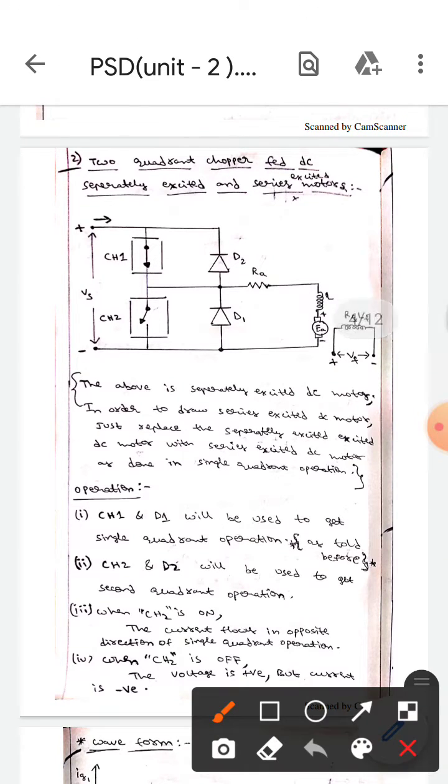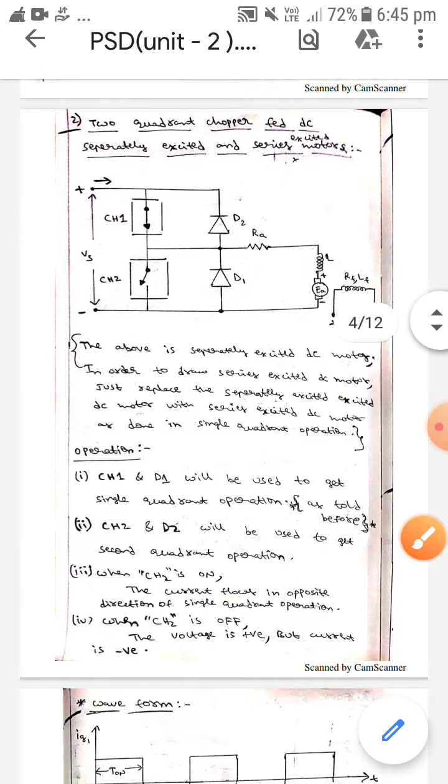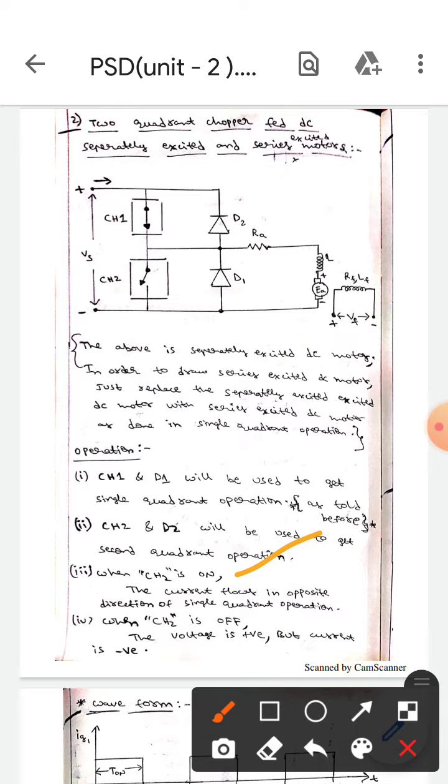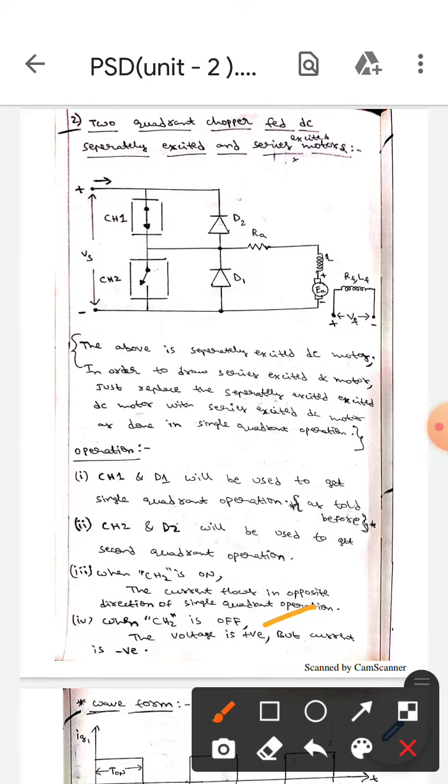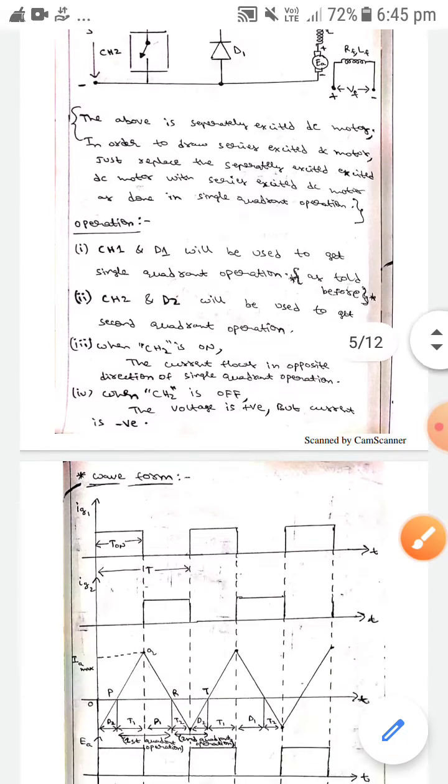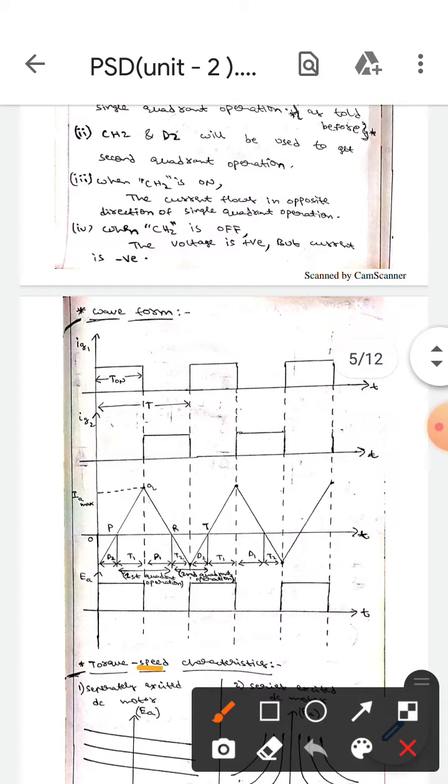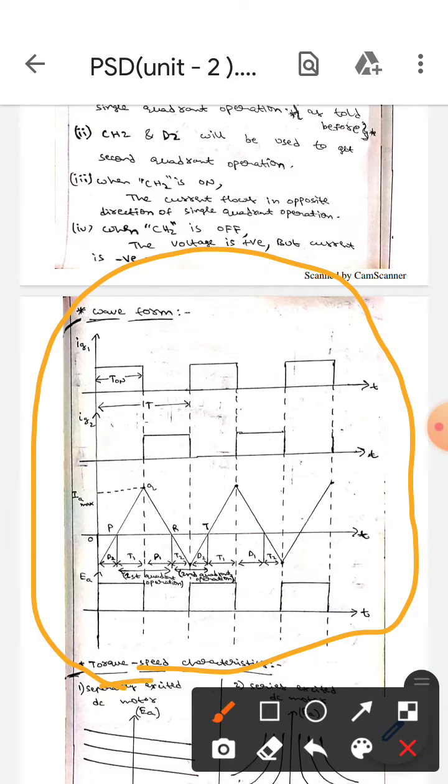CH2 and D2 will be used to get second quadrant operation. When CH2 is on, the current flows in opposite direction of single quadrant operation. When CH2 is off, the voltage is positive but current is negative.